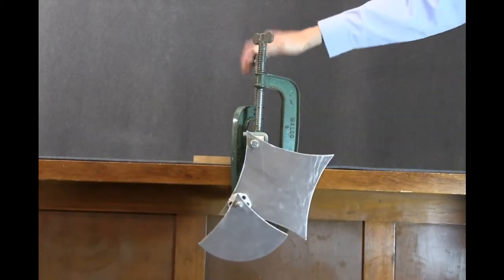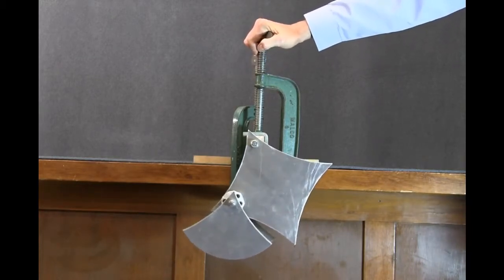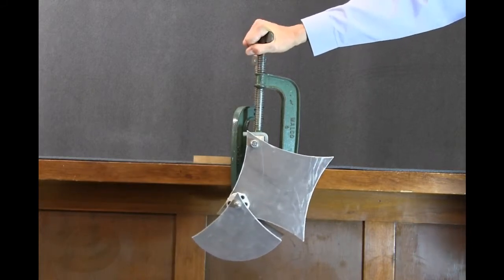This part of the apparatus up here are two very large G clamps. All they do are holding this to the desk. You'll see in a minute why I need these big chunky clamps here.